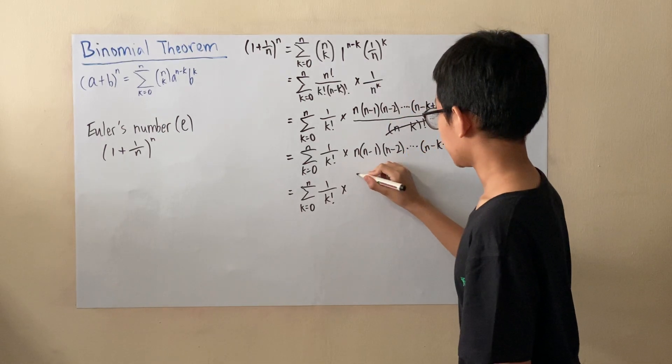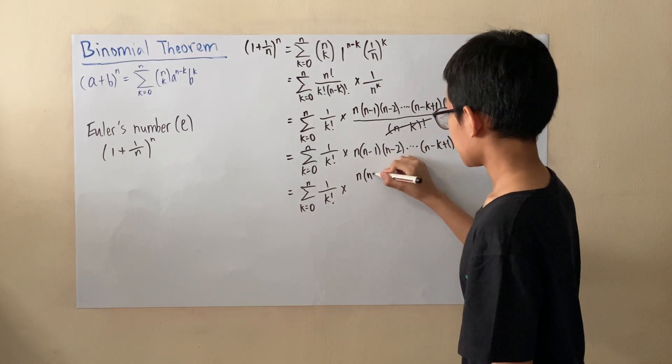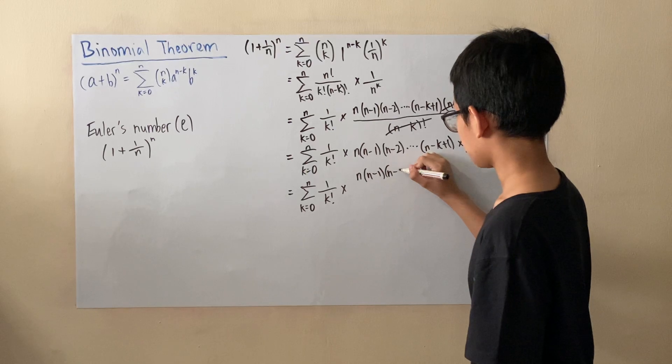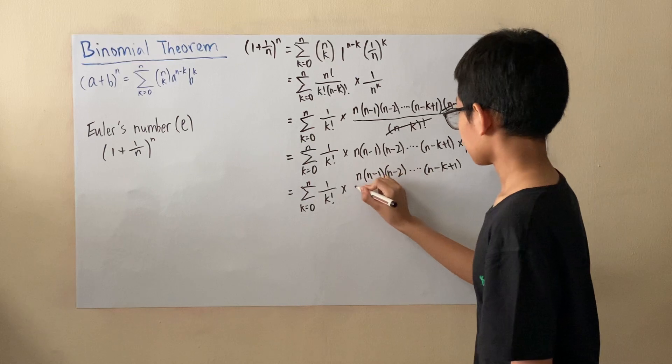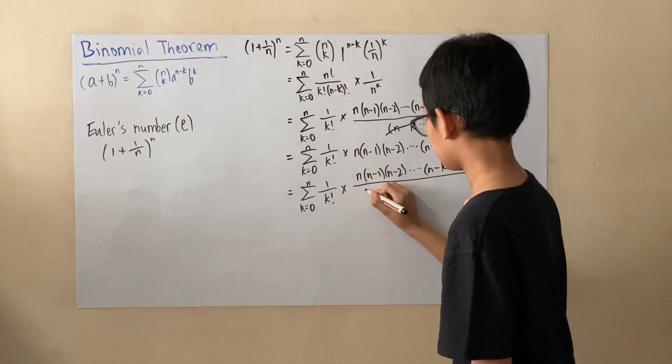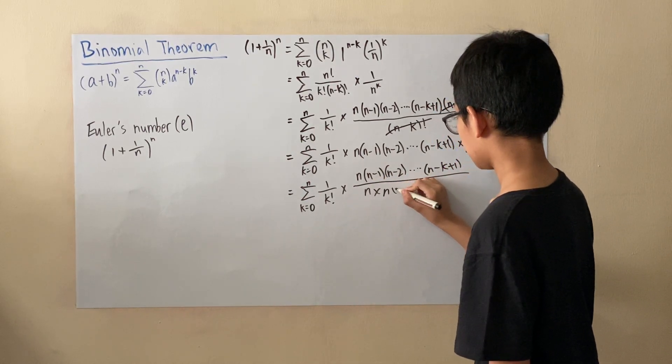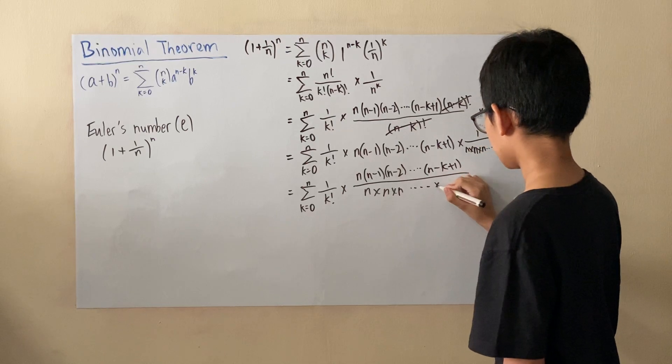So the fraction will be on the numerator, n times (n-1) times (n-2) all the way to (n-k+1). And at the bottom, it will be n times n times... k times.